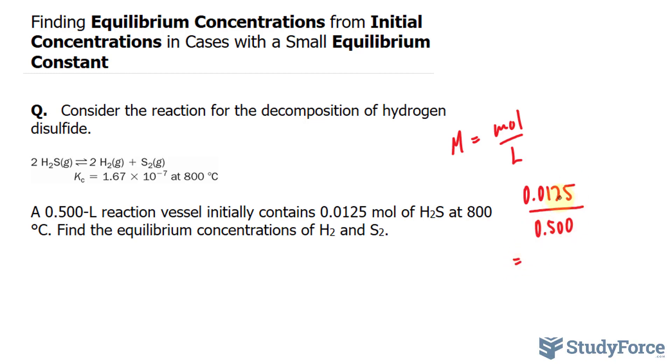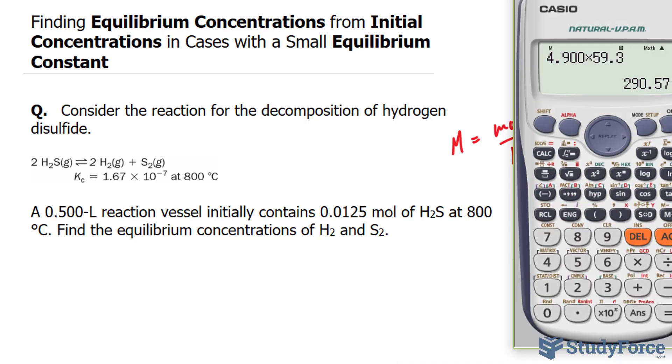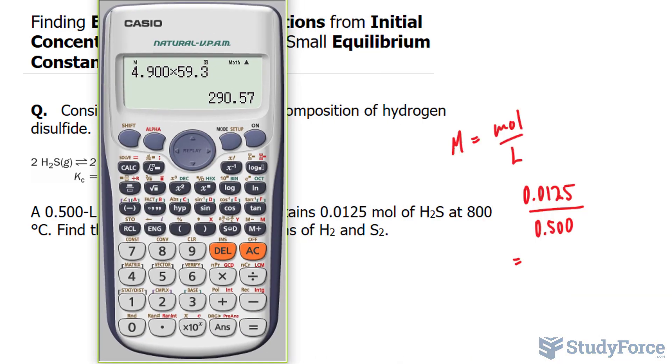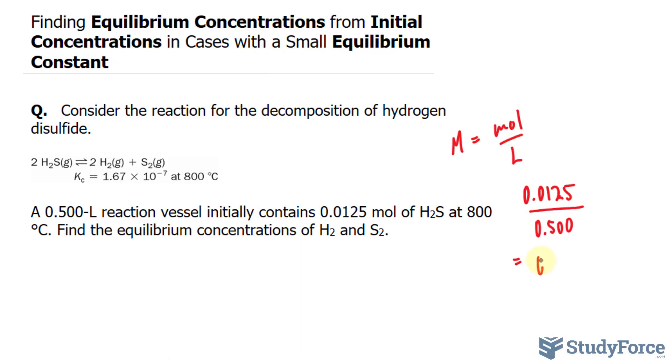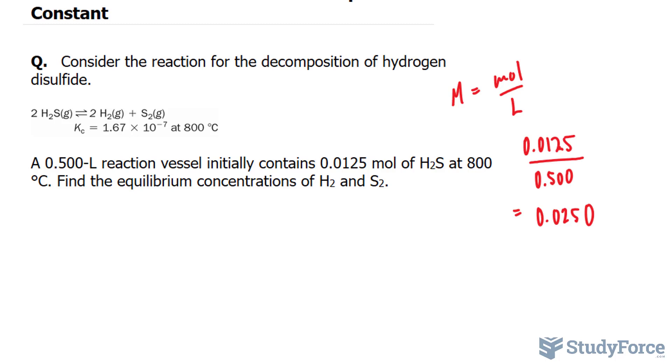When we divide these two numbers out, make sure that it has three significant figures. 0.0125 divided by 0.500 gives us a concentration of 0.0250. This has three significant figures. So now we know the initial concentration of H2S. I'll rewrite the reaction. Two molecules of H2S yields two molecules of H2 plus one molecule of S2.